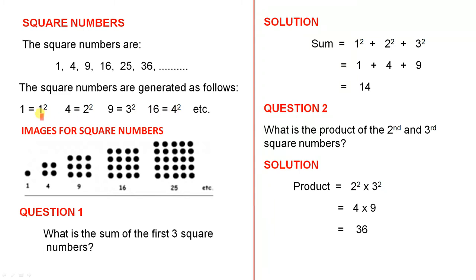So basically you have 1 squared, 2 squared, 3 squared, 4 squared, 5 squared, 6 squared, etc.